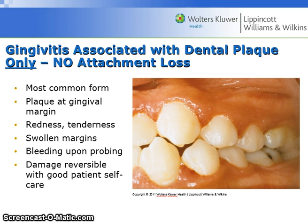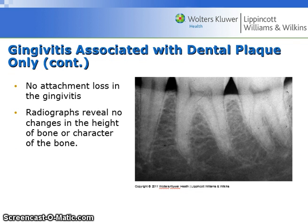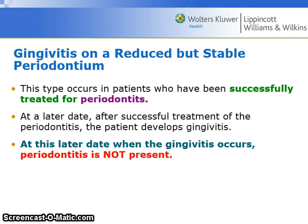Signs include redness, tenderness, swollen margins, and bleeding upon probing. The damage is reversible with good patient self-care. There is no attachment loss in gingivitis, and radiographs reveal no changes in the height of bone or the character of the bone.